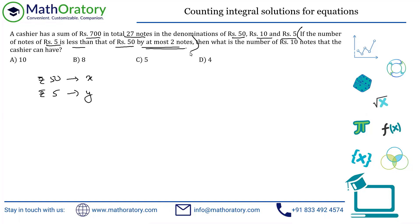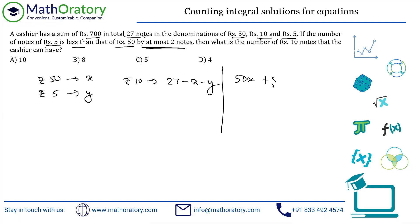Let X = number of ₹50 notes and Y = number of ₹5 notes. Then the number of ₹10 notes = 27 − X − Y. Using the total amount: 50X + 5Y + 10(27 − X − Y) = 700. Dividing through by 5 and simplifying, you arrive at 8X − Y = 86.